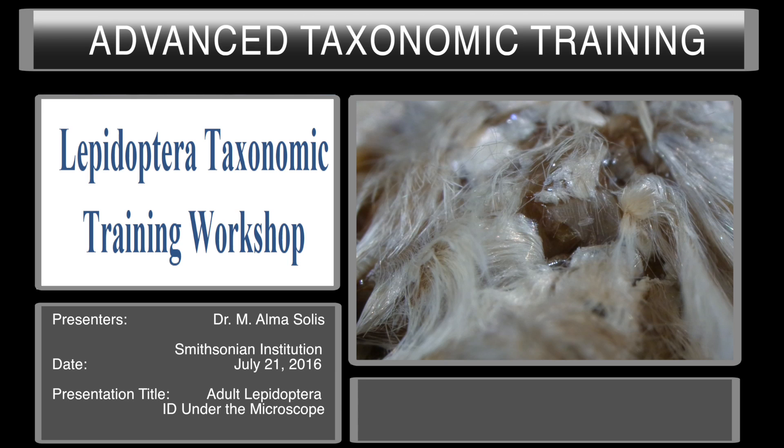I should also say, if the proboscis is smooth and it's not a Geometroid or a Noctoid — generally, but not always — if the moth is small, then it's going to be a microlepidoptera, which includes the Tortricoidea. If it's very large, it's going to turn out to be something like a Bombycoid, which you should be able to identify just by looking at the moth externally.